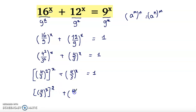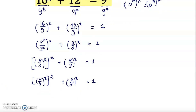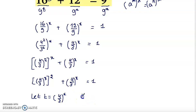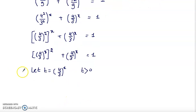So we have (4 over 3) to the power x all squared plus (4 over 3) to the power x equals 1. Now we'll take a variable t equal to (4 over 3) to the power x, where t is greater than 0 because 4 over 3 is positive. So we have t squared plus t equals 1.